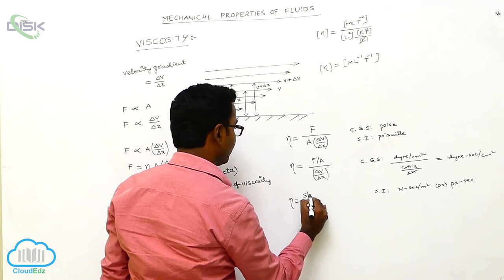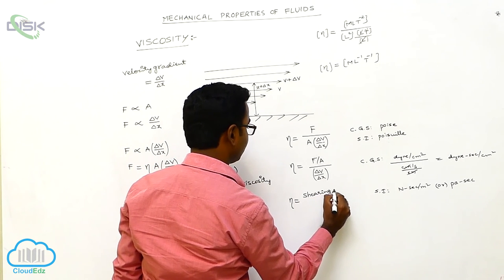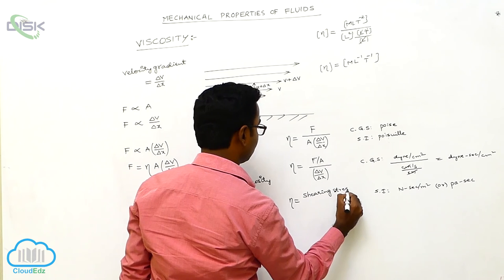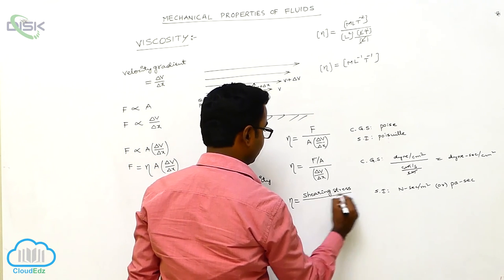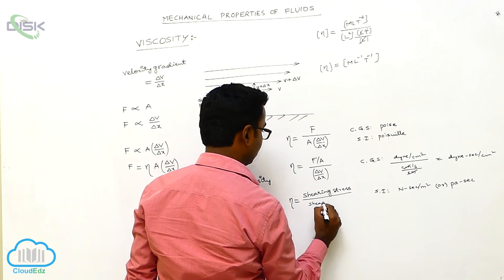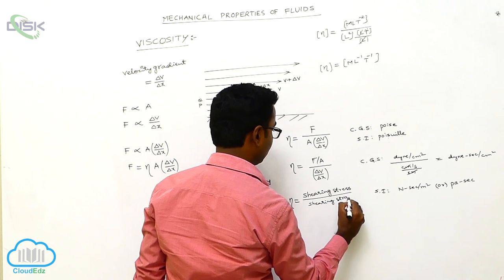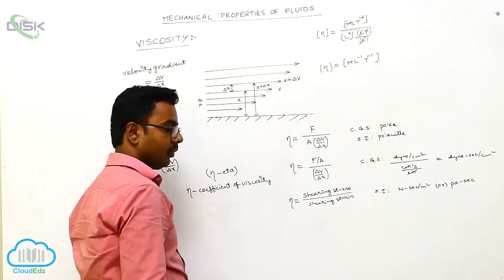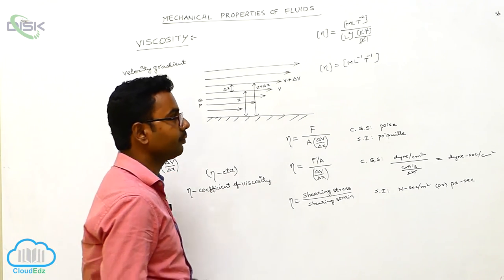The coefficient of viscosity is also defined as the ratio of shearing stress to shearing strain rate. This completes the discussion on the coefficient of viscosity.